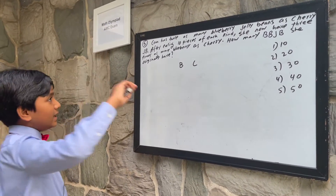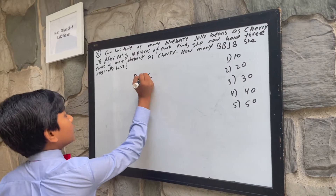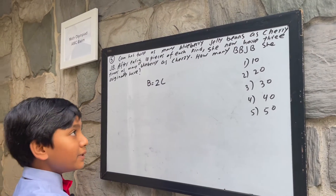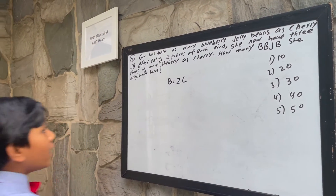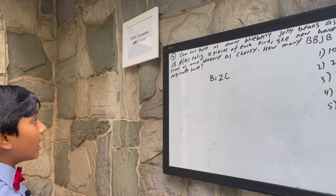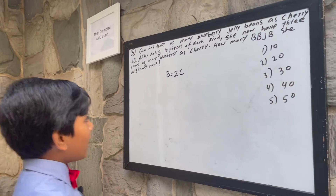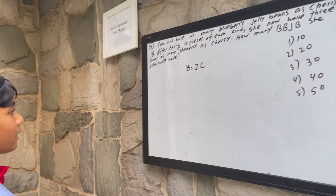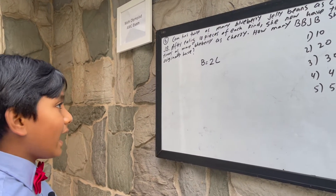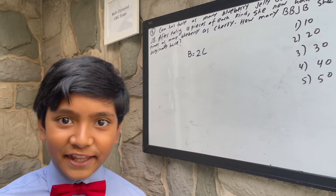After eating 10 pieces of each kind, she now has 3 times as many blueberries as cherries. How many blueberry jelly beans did she originally have? 10, 20, 30, 40, or 50?